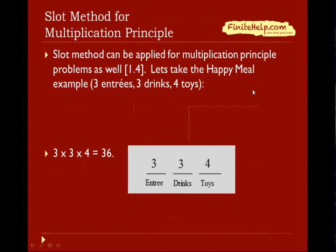You remember from 1.4, you learned this multiplication principle. Well, a slot actually works for multiplication principle as well. So let's look at the Happy Meal example with our three entrees, three drinks, and four toys. So I simply named the slots entree, drinks, and toys, and I just put the number of possibilities for each on the slots and multiply across to get my 36 for the answer.